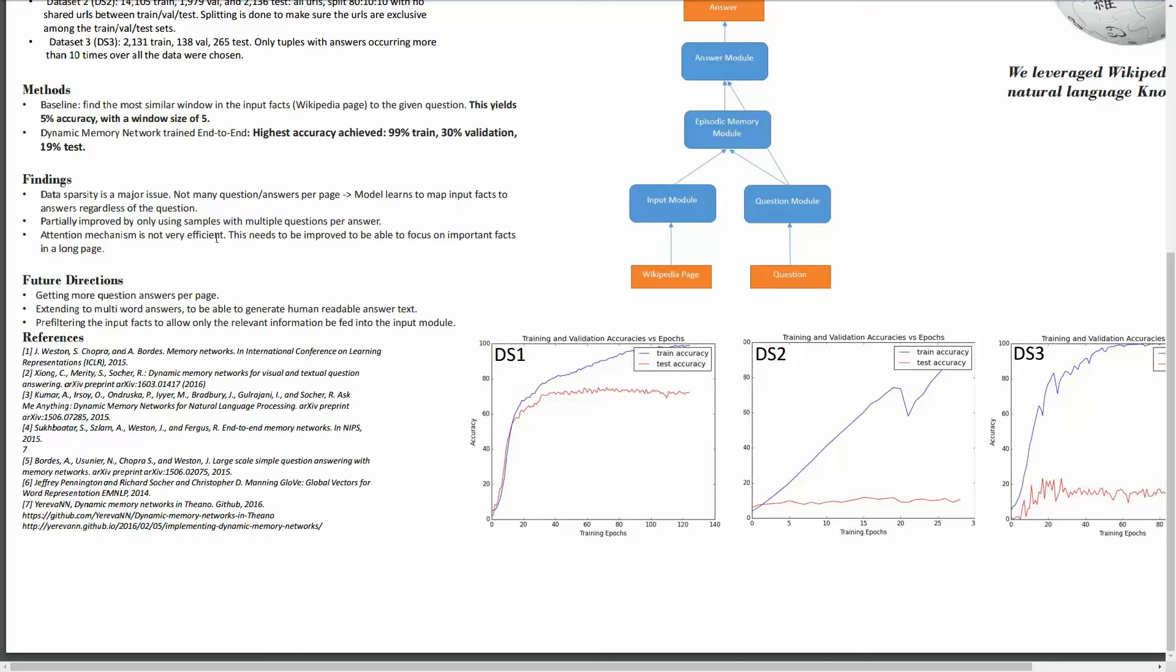Also, the attention mechanism is not very efficient because it has to attend to hundreds of facts per page, and if you don't have many question answers, that would be very difficult in terms of gradient flow. I think we need to add more question answers. We can extend that to multi-word answers which are more human readable and more in line with our vision, and also improving the attention mechanism by somehow pre-filtering facts or having a more efficient system. Thank you.